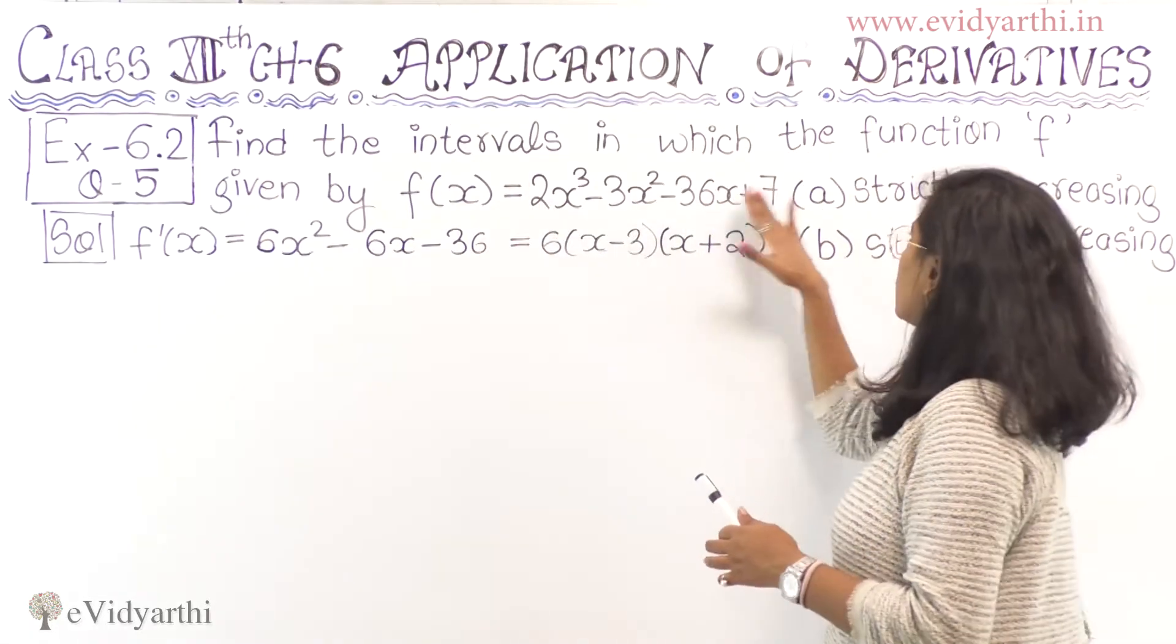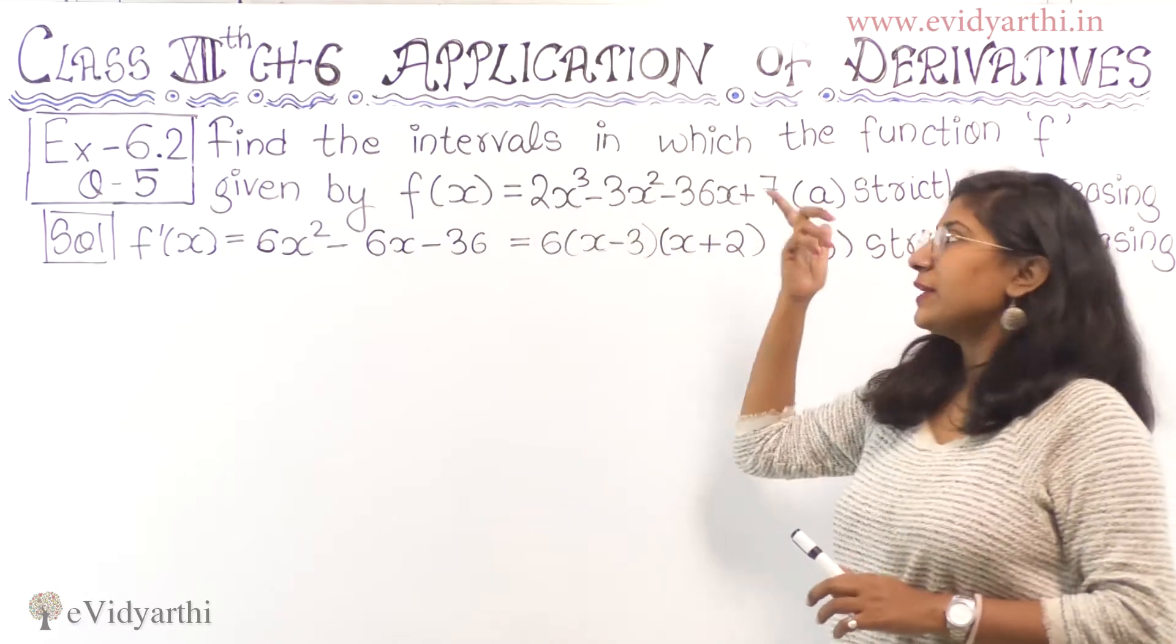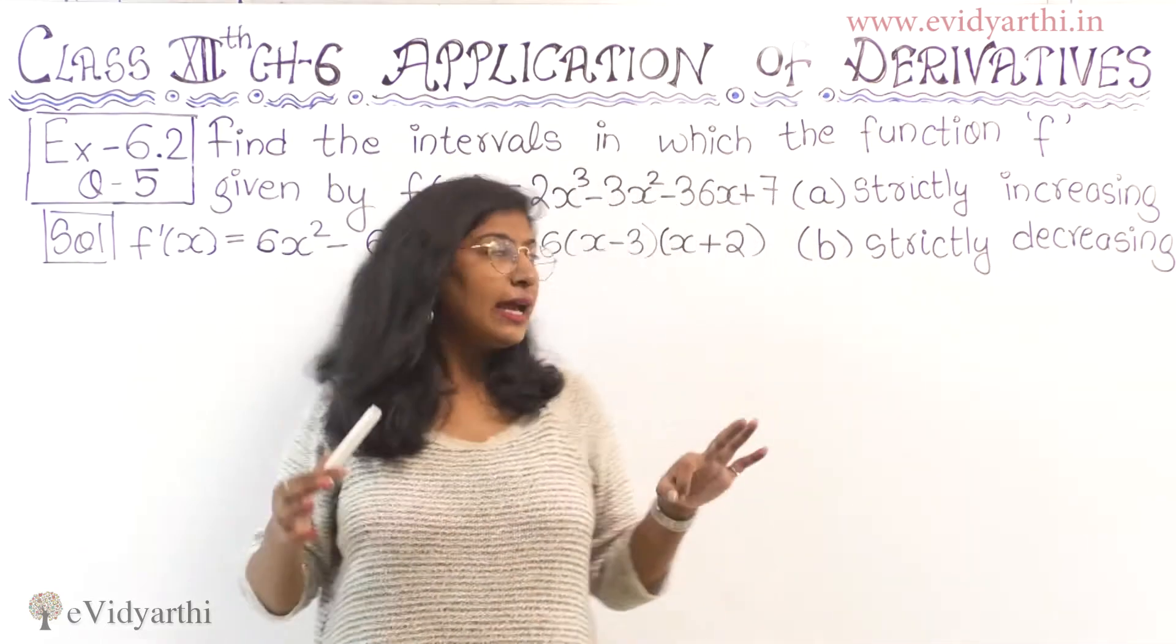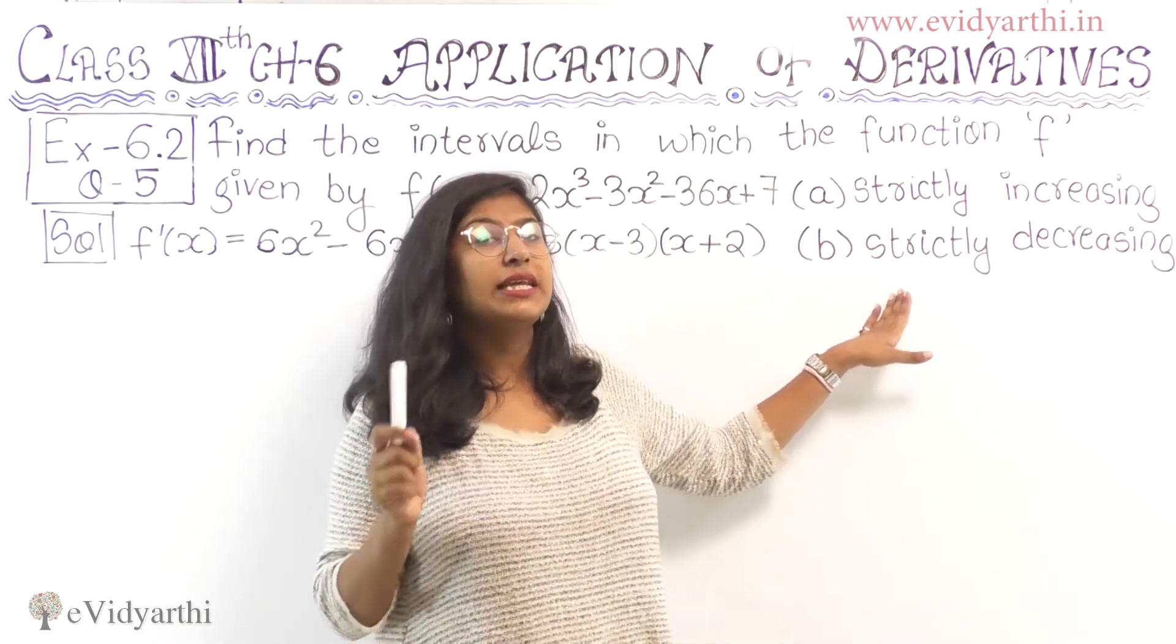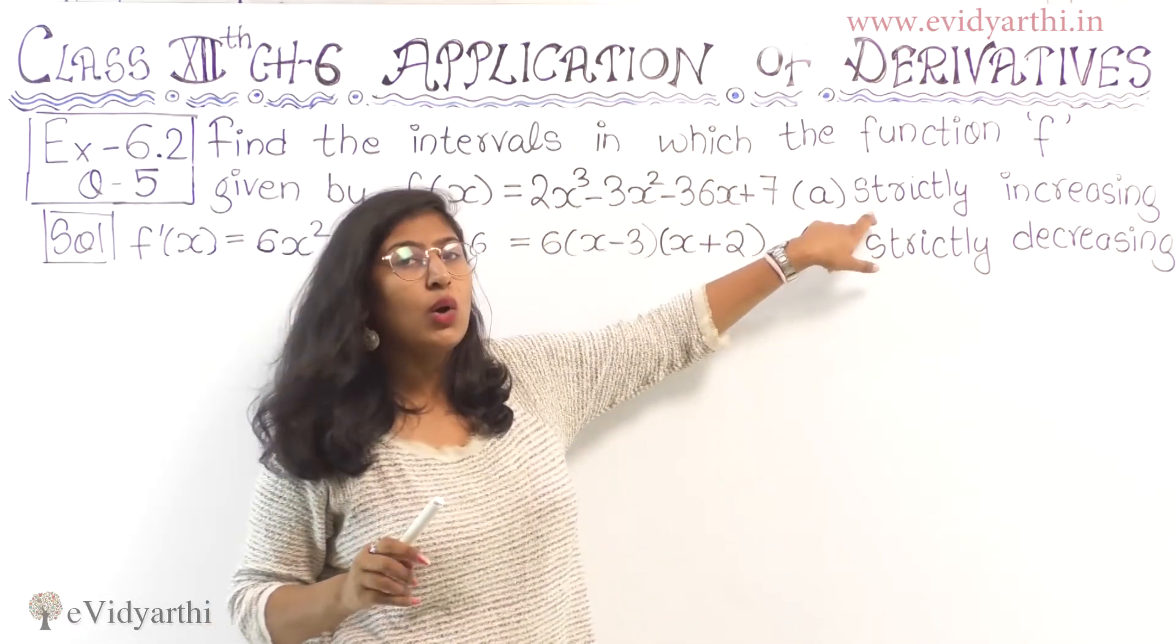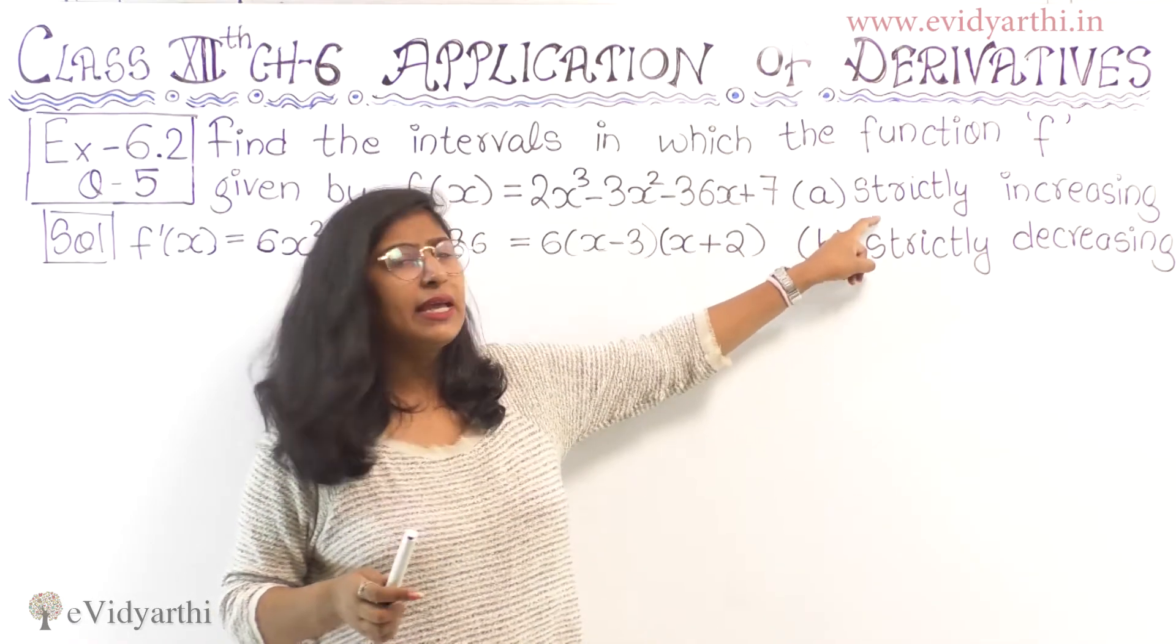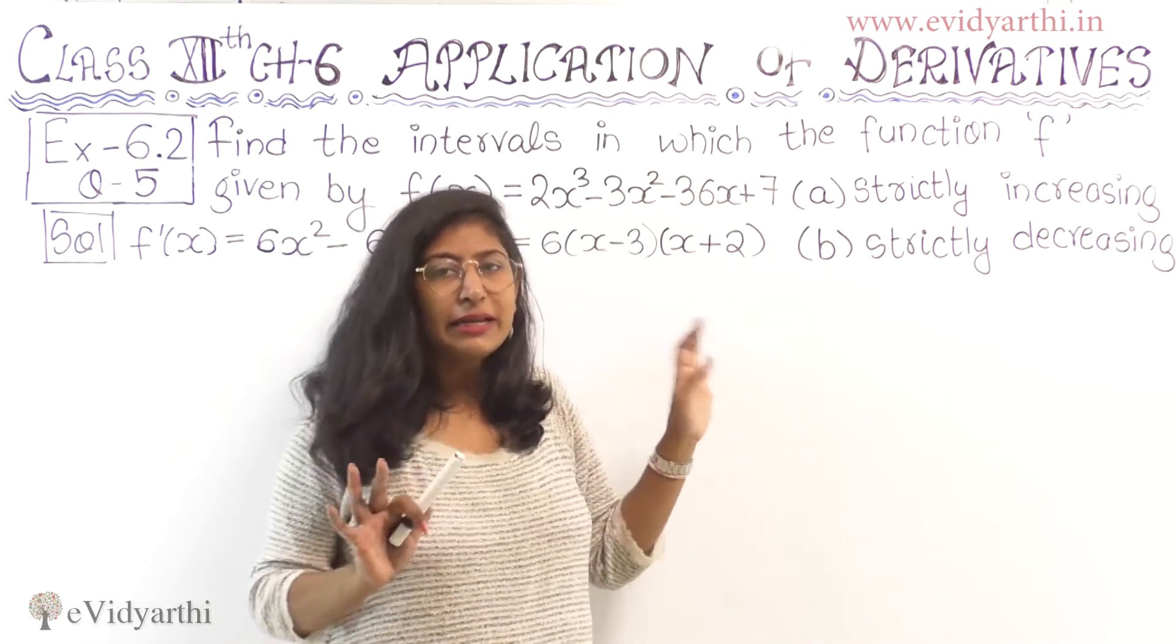Find the intervals in which the function f given by f(x) = 2x³ - 3x² - 36x + 7 is (a) strictly increasing or (b) strictly decreasing. So we have to find intervals in which the function derivative is greater than 0 and less than 0.